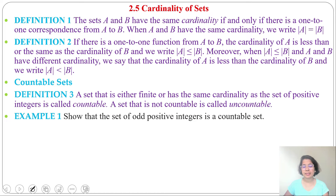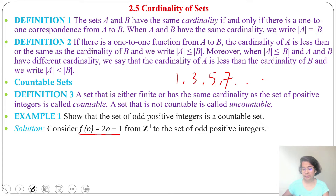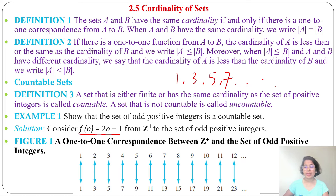Let's see one example. Example 1: show that the set of odd positive integers is a countable set. The set of odd positive integers can be written as f(n) = 2n − 1, giving 1, 3, 5, 7, and so on. Is it countable? Yes — we can match it with the positive integers.